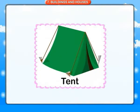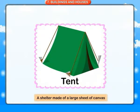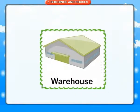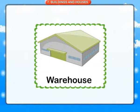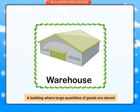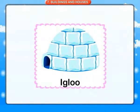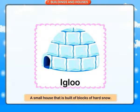Pyramid: a large building with a flat base and triangular sloping sides that meet in a point at the top. Skyscraper: a very tall multi-storey building in a city. Tent: a shelter made of a large sheet of canvas. Warehouse: a building where large quantities of goods are stored. Igloo: a small house built of blocks of hard snow.